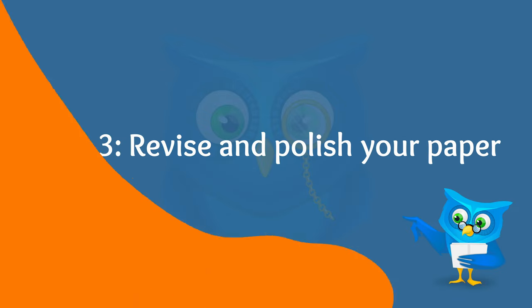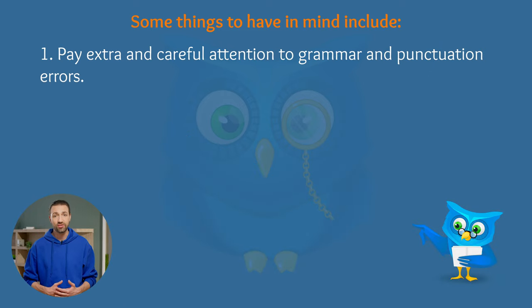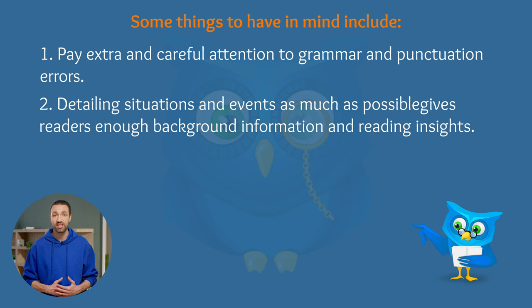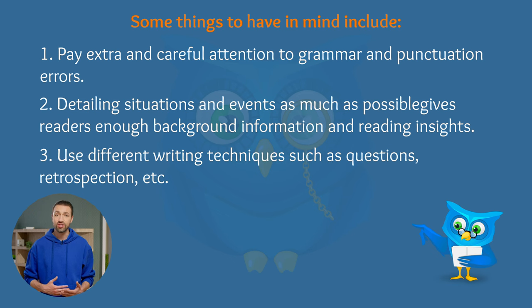Step 3: Revise and polish your paper. After writing a complete autobiography paper, you'll need to take some time revising and polishing the piece to fix any mistakes and rewrite incoherent sentences. Pay extra and careful attention to grammar and punctuation errors. Detailing situations and events as much as possible gives readers enough background information and reading insights. Use different writing techniques such as questions, retrospections, etc. To complete an autobiography, you must be true to yourself and write about what you care about and what matters the most.